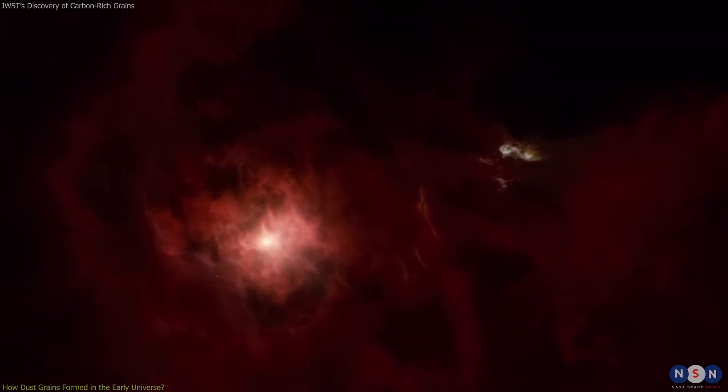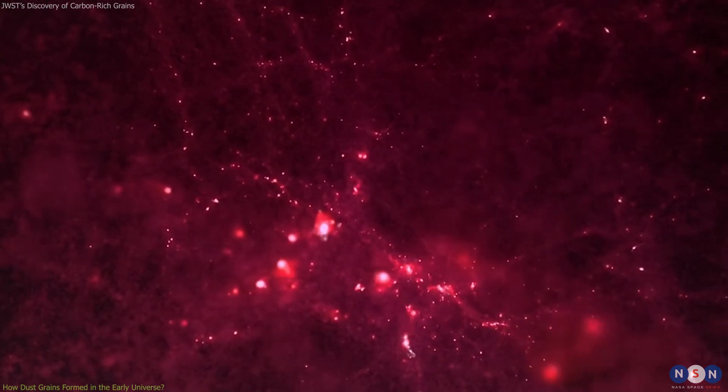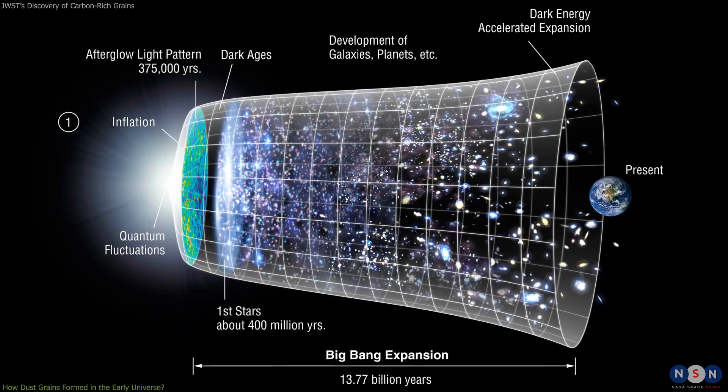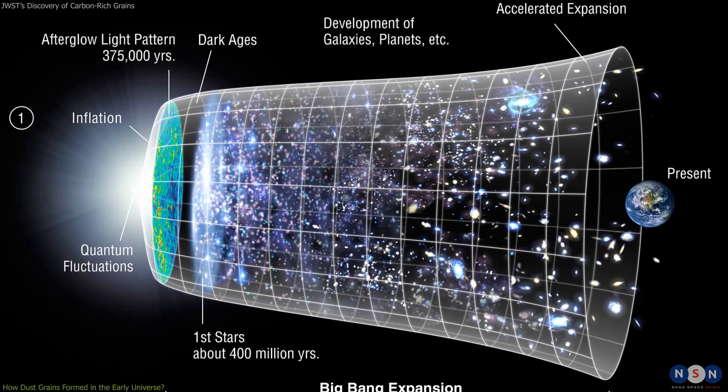But where did dust grains come from in the first place? How did they form in the early universe when there were no stars or planets yet? These are some of the most puzzling questions in cosmology. According to our current models, dust grains should not have existed in large quantities in the first billion years of cosmic time because there was not enough time for stars to produce and disperse them.